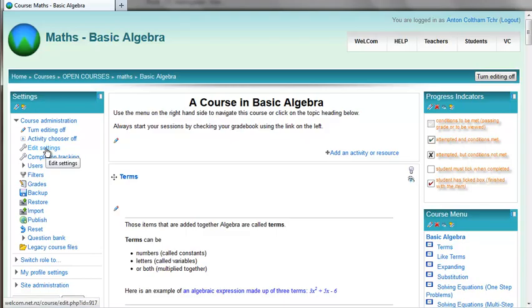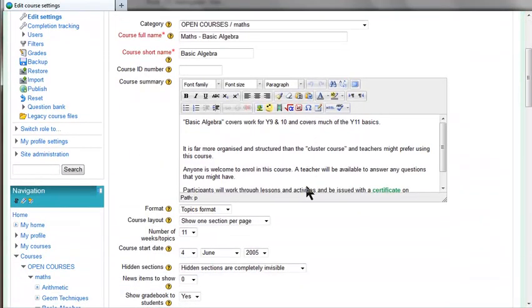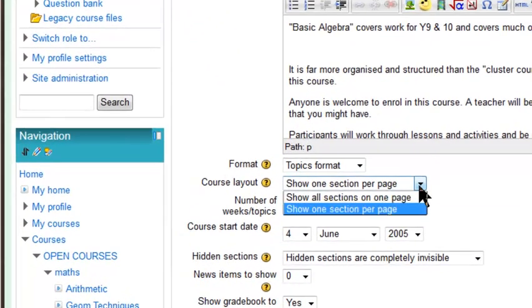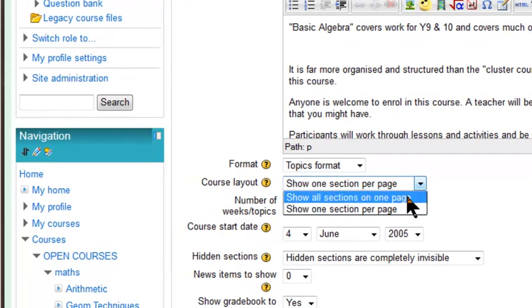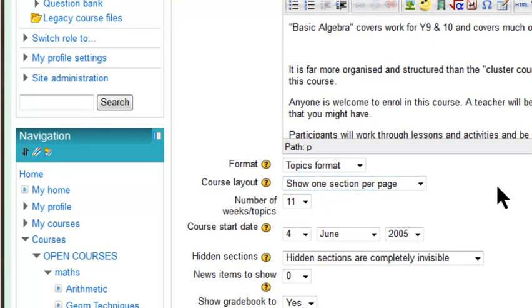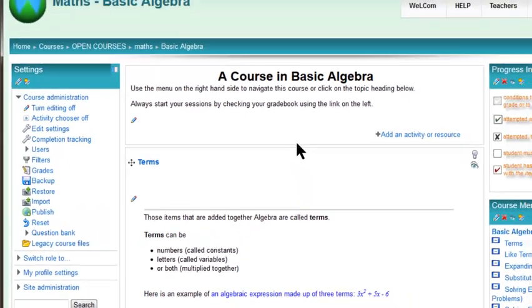But under the edit settings, I've chosen this option here, show one section per page instead of the default one, which is show all sections per page. So I've just chosen that one, which has the following effect.